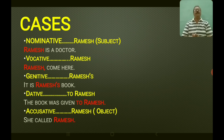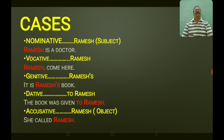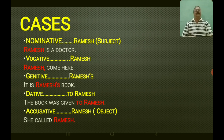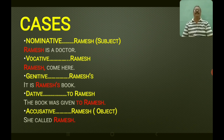The dative case is used when something is handed over to someone — the word 'to' is added before the noun. Example: 'The book was given to Ramesh' — Ramesh is in the dative case. The accusative case is found in the object part of a sentence. Example: 'She called Ramesh' — she is nominative and Ramesh is in the accusative case.